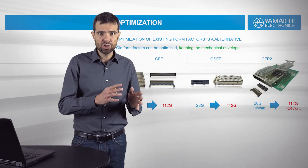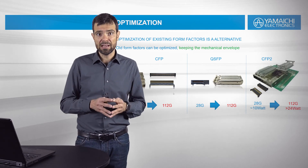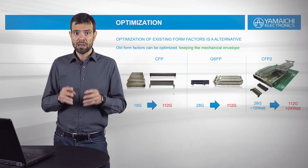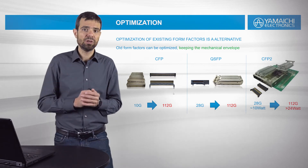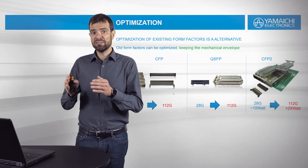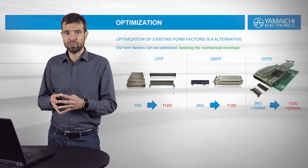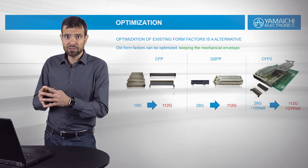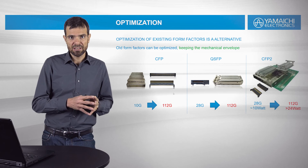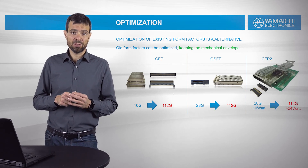CFP has been upgraded from 10G to 112G, allowing more than one Tera of throughput. QSFP has been upgraded from 20G to 112G — this is actually a 400G form factor. I am talking about QSFP-112G, which has the same throughput per slot as QSFP-DD 56G. Last but not least, CFP2 has also been upgraded to 112G, and not only the data rate but also the wattage — originally around 10 watts, now we can go beyond 24 watts, which is really important for coherent transmission.